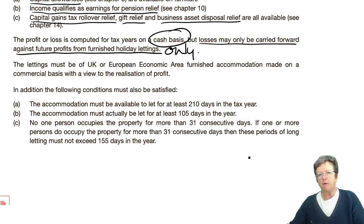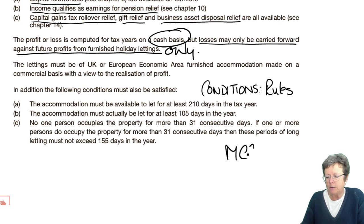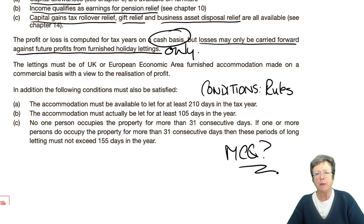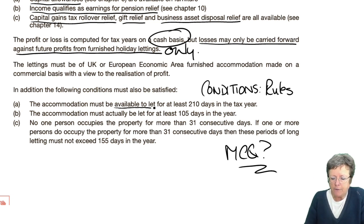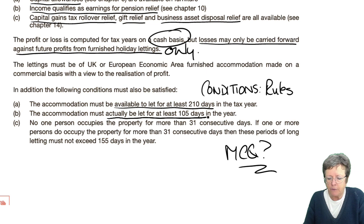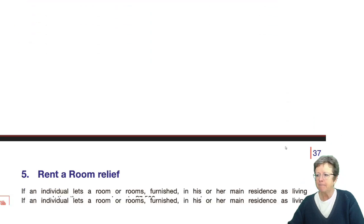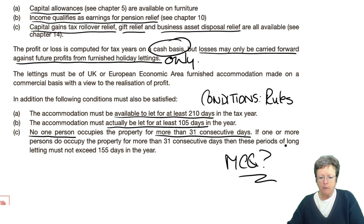This is a very favourable type of property income, so there are various conditions — these are the rules and you need to learn them. I have seen this as a multiple choice question; you'll probably find one in the BPP revision guide. It's got to be available to let for at least 210 days — days, not months — actually let for 105 of those, and no one person occupies for more than 31 consecutive days, otherwise it's not a holiday letting. So those are the conditions, and those are the benefits at the top.